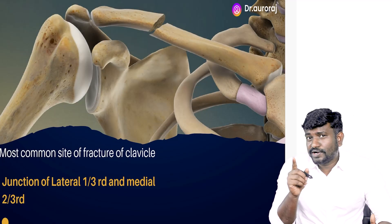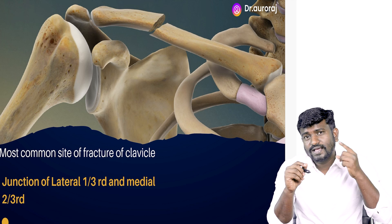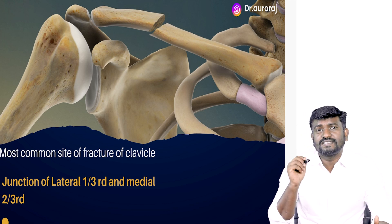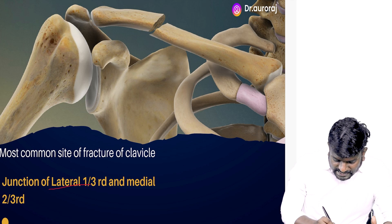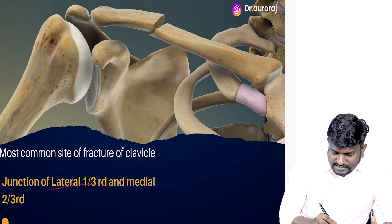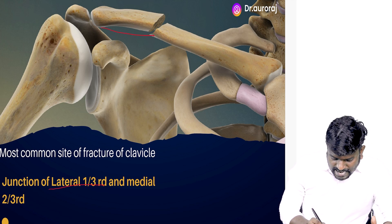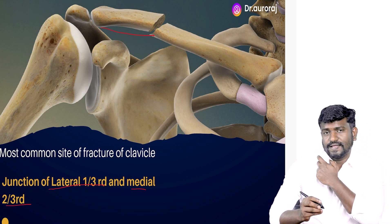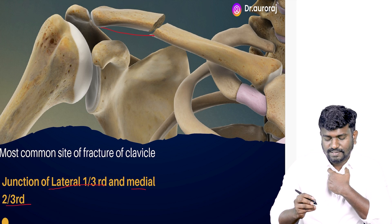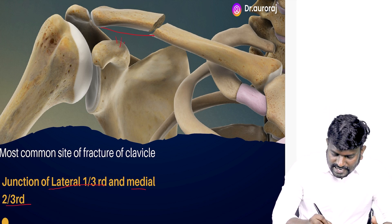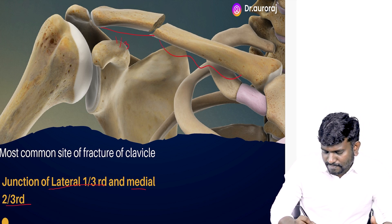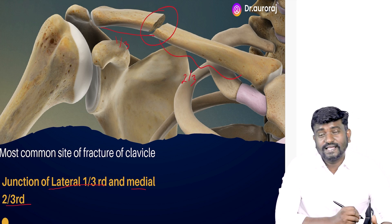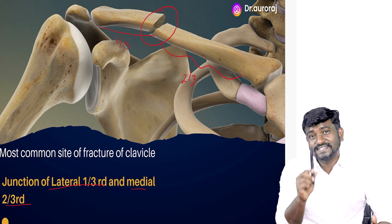Clavicle is a very important bone in the body. It is the only horizontal bone in the body. The most common site of the clavicle fracture is going to be at the junction of the lateral one-third and medial two-third. The lateral part starts from here and then goes down to the sternum. This is the most common area where the clavicle gets fractured.